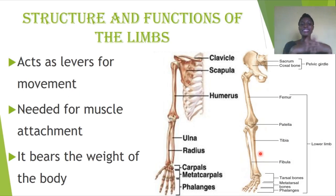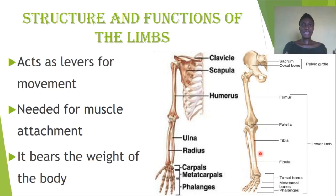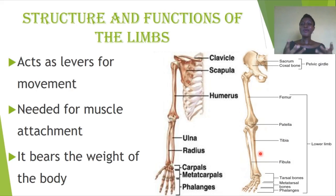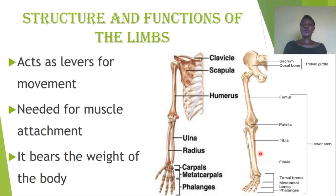Finally, the lower limbs also have the phalanges, which are the digits. These are important for movement — muscles attach to the bones, and their contraction and relaxation brings about movement. Bear in mind that the weight of the body is borne on the limbs, specifically the lower limbs.